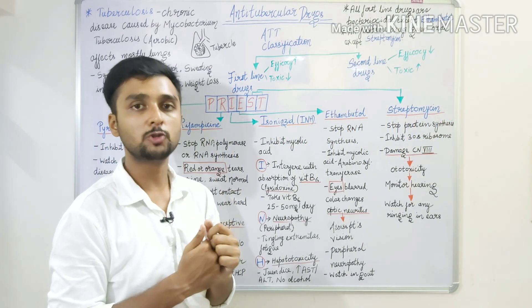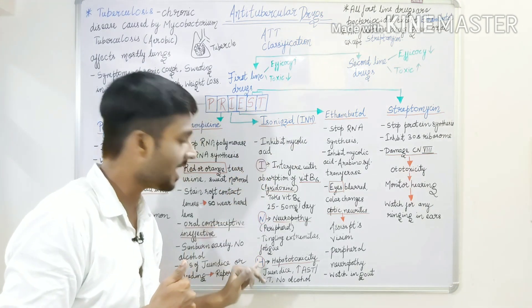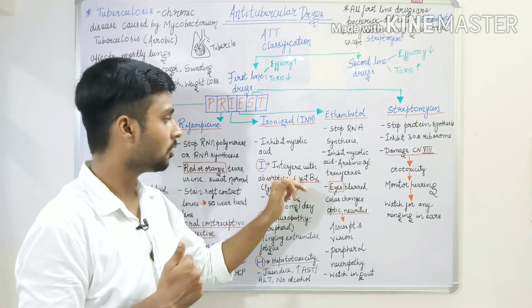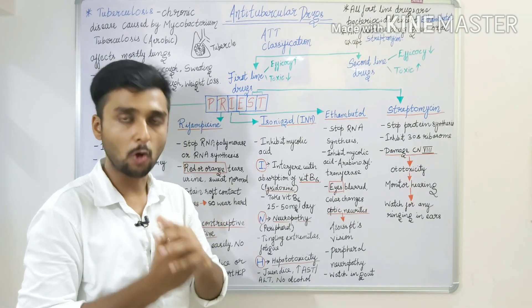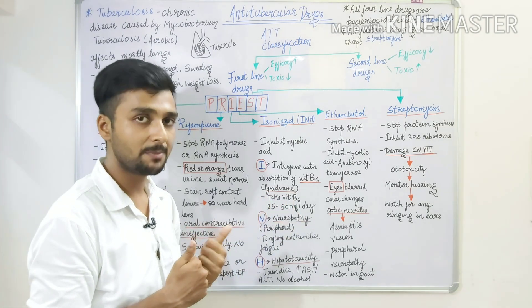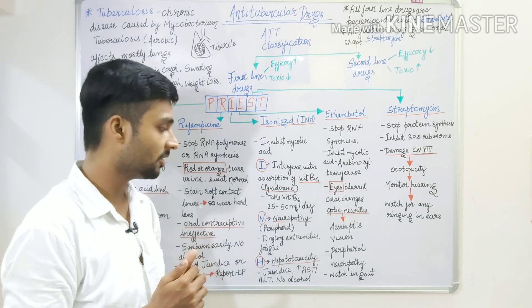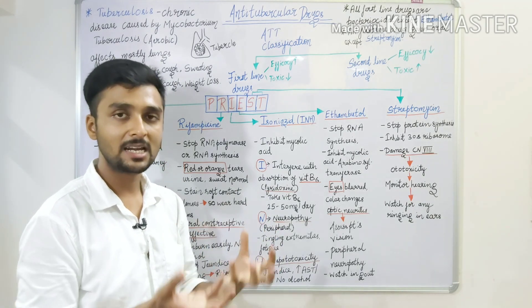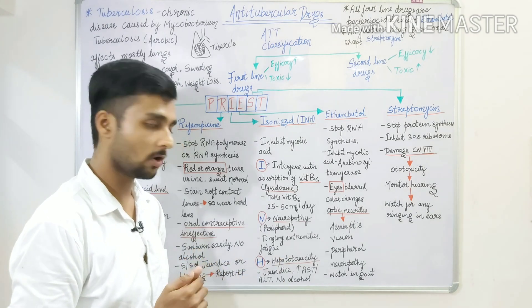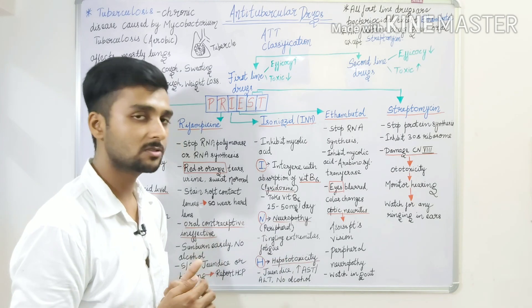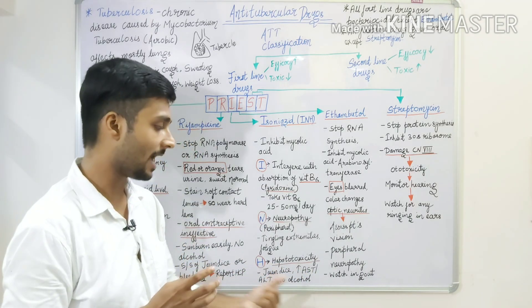Next is Isoniazid. We represent this drug in short form as INH. This drug inhibits mycolic acid. We remember that INH interferes with absorption of vitamin B6 or pyridoxine. After giving this drug, vitamin B6 absorption is very low. Therefore, we will give the patient vitamin B6 supplementation, 25-50 mg per day. N for neuropathy - if this drug is toxic, it causes peripheral neuropathy. What will the patient tell us? Tingling in the extremity or burning sensation. H is hepatotoxicity. If you have a liver disease, you will get more toxicity. We will get elevated AST and ALT levels and we will avoid alcohol.